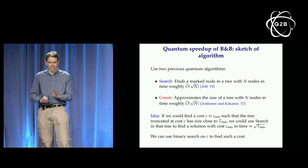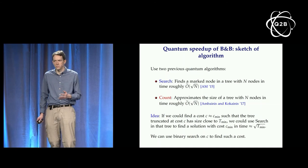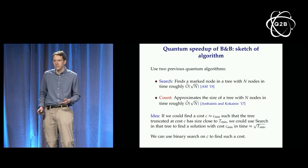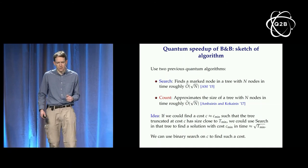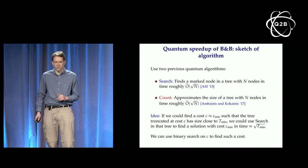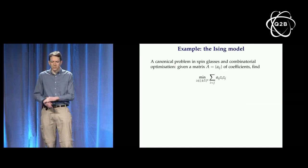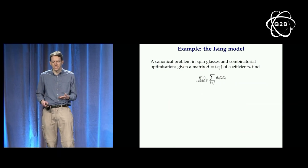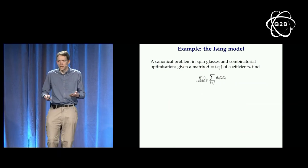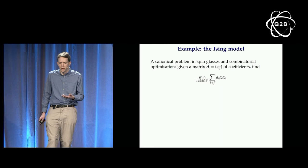The key point is that the algorithm uses a purely classical idea — no new quantum ideas — and it's interesting that you can get new results using this approach. For those with interest in physics, one application is solving the Ising model, which is a fundamental problem in spin glass theory and also in combinatorial optimization.